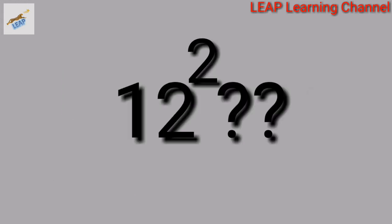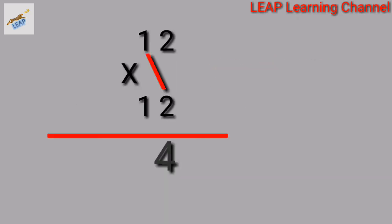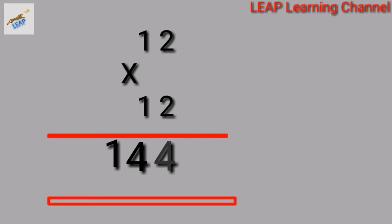First, 12 square: 12 into 12. First multiply the one's digits, 2 into 2 is 4. Then cross multiply and double it. So 1 into 2 into 2, that's 2 into 2, 4. Then multiply 1 into 1, which is 1. So the square of 12 is 144.